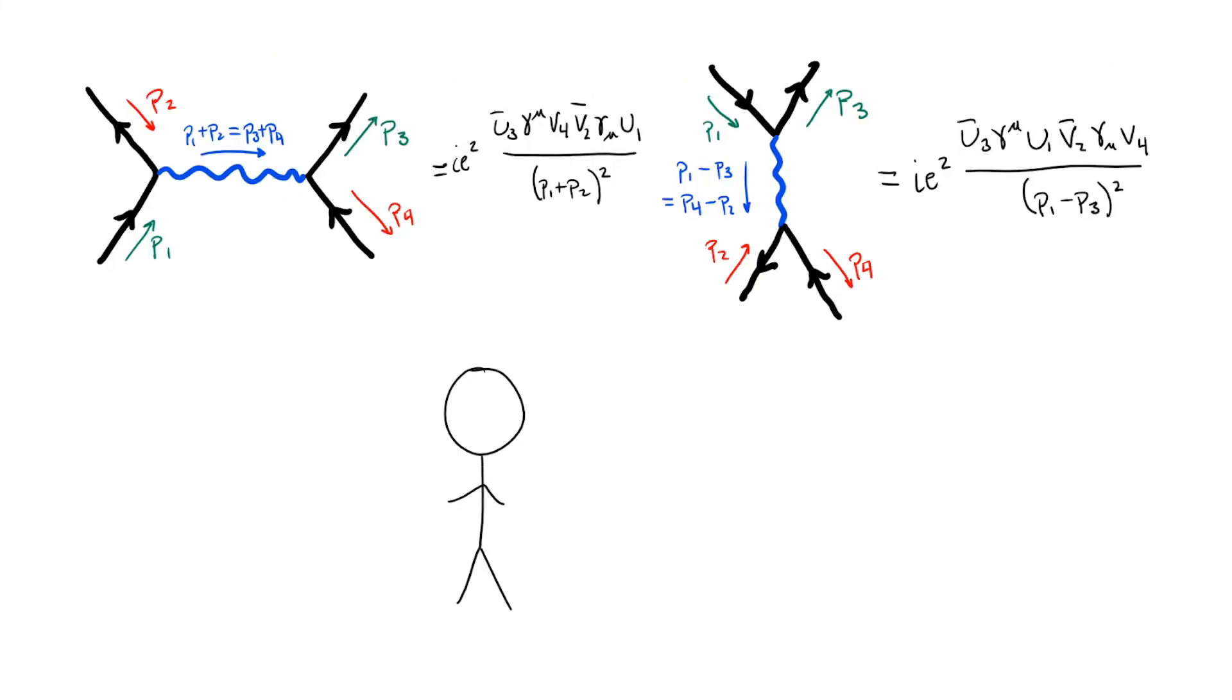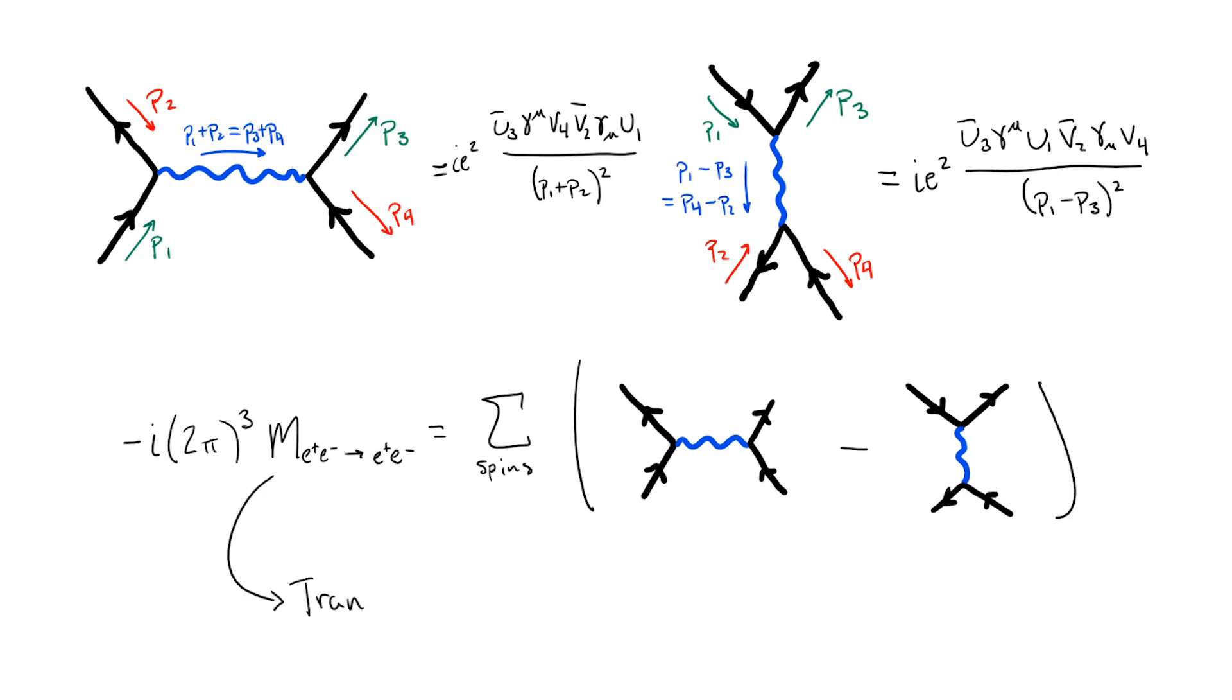But what do these expressions actually correspond to? What have we calculated? In fancy language, the sum of these terms gives the leading order approximation to the quantum mechanical transition amplitude from the initial to the final state.